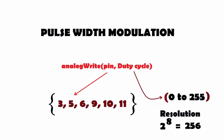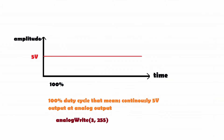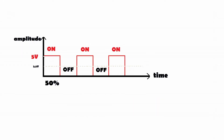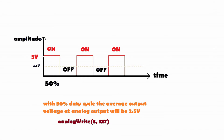Let's explore the PWM concept further using a graph. If we apply 5 volts continuously at an analog output pin, the duty cycle is 100%, and in the analogWrite instruction we would write pin 3 with value 255. If we want only half the analog output — that is, 2.5 volts — we reduce the duty cycle to 50%. The signal is then high for half the period and low for the other half, giving an average output of 2.5 volts.